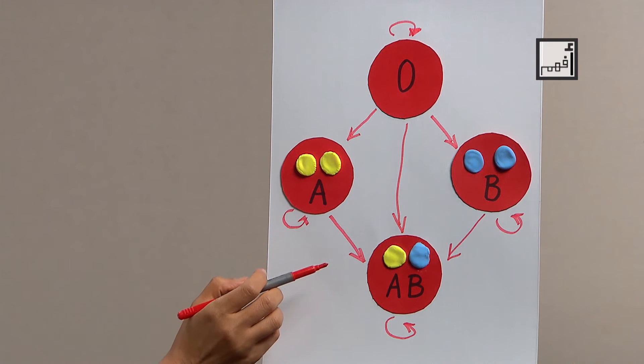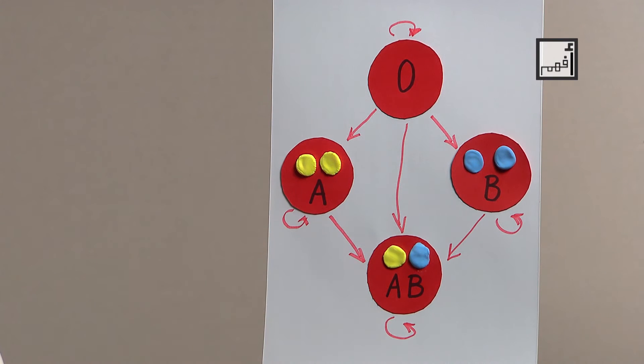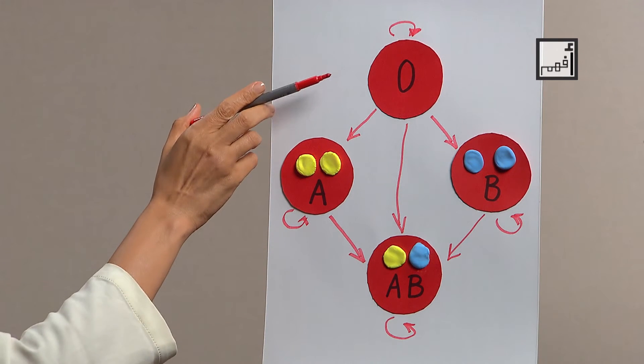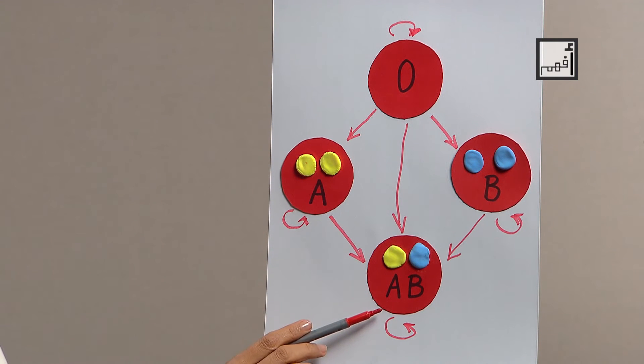Group AB can receive blood from all blood types and O can donate blood to all blood types or groups. So O is called a universal donor and AB is called a universal recipient.